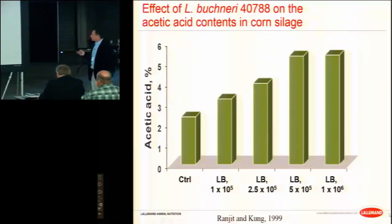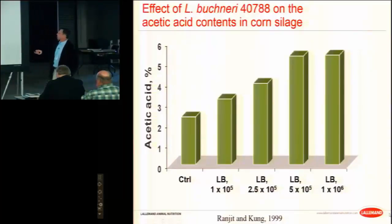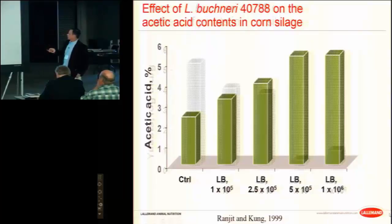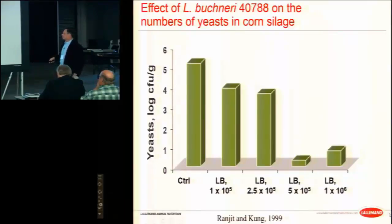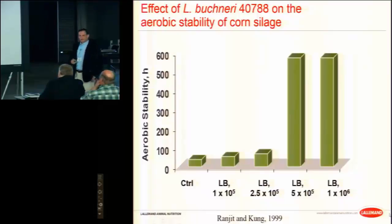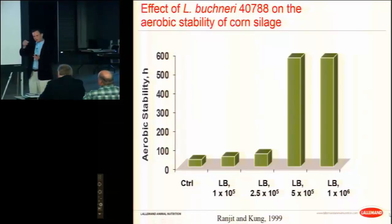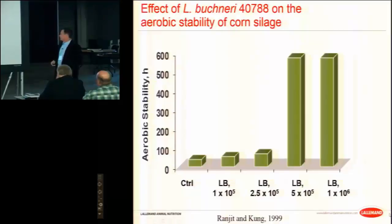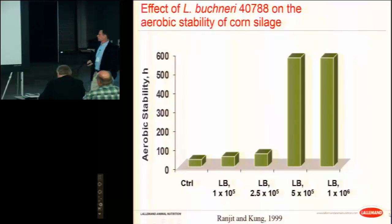This is the only product with FDA approval and a claim on improvement in aerobic stability - the high dose of Lactobacillus buchneri. We see a plateau in acetic acid production, and then in the yeast population they're suddenly wiped out, inhibited dramatically. Consequently there is a huge improvement in aerobic stability. It's analogous to a titration in analytical chemistry where one drop causes a sudden complete color change - you need to reach a certain population of L. buchneri to get the result.